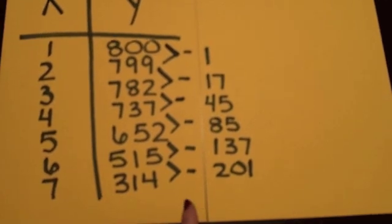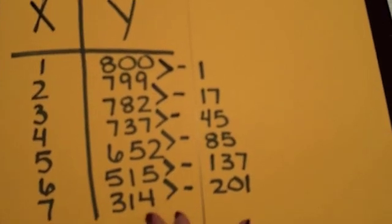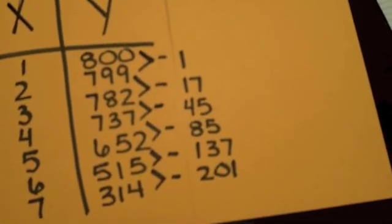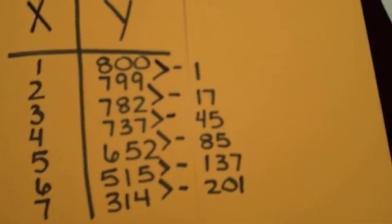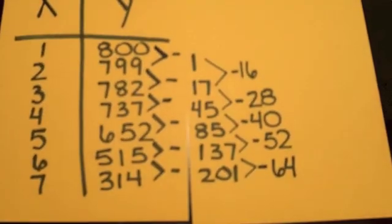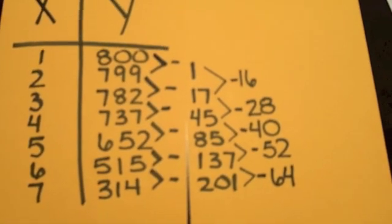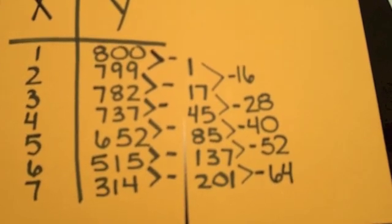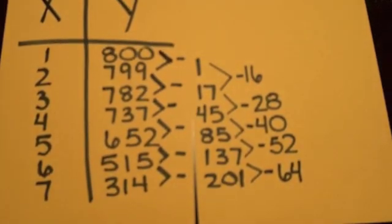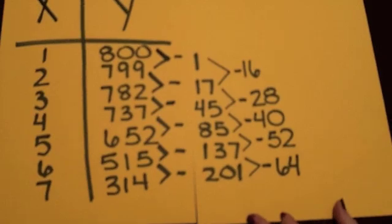Now that she has found the rate of change and they are not all the same constant rate of change, she is going to have to find the rate of change of the rate of change. Again, we have the same result — they are not all the same constant. So Bethany will again have to find the rate of change of the rate of change of the rate of change.